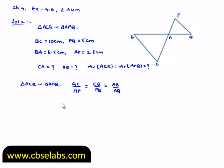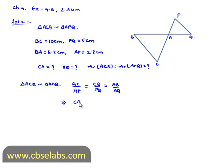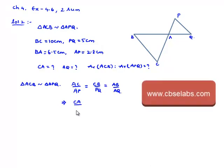Which implies AC, here is nothing but we need to find that is nothing but CA divided by AP is given as 2.8, that is equal to CB or BC is given as 10 cm divided by PQ is given as 5 cm, that is equal to AB value or BA is given as 6.5 divided by AQ which we need to find.